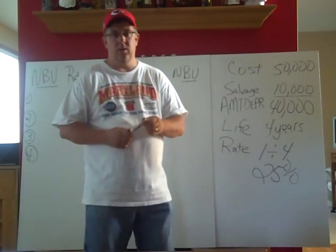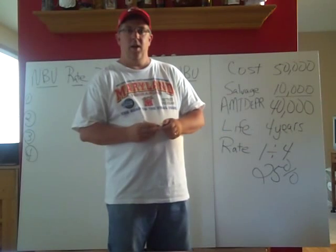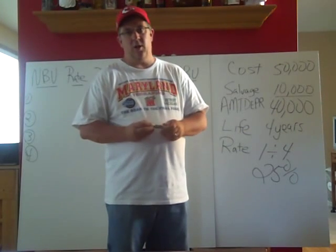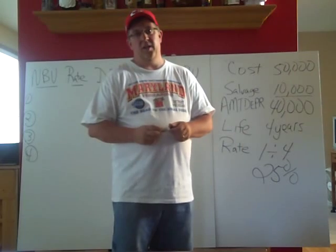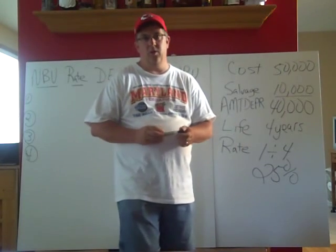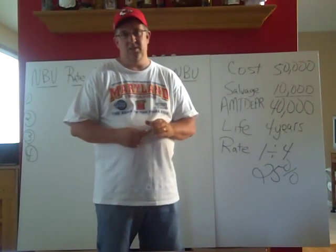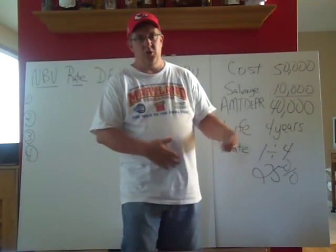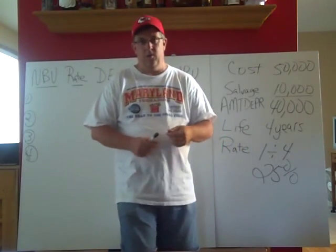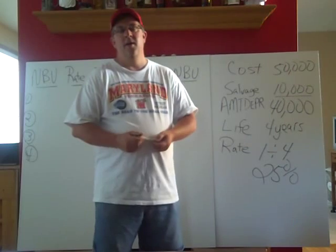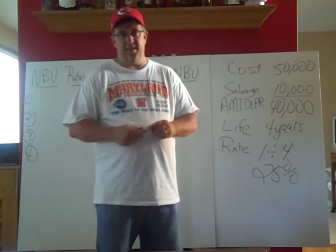We're going to continue our talk about depreciation. This time we're going to talk about what's called accelerated depreciation. The method we're going to use is double declining balance. The main purpose of this is we're going to be taking more depreciation expense — it's going to hit our income statement earlier on, and then less later on in the useful life of the asset.